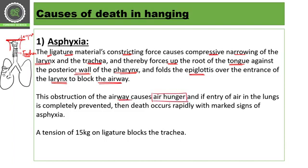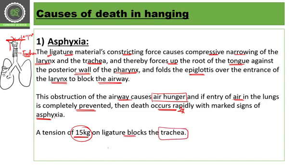This obstruction of the airway causes air hunger. If the entry of air into the lungs is completely prevented, death occurs rapidly and creates signs of asphyxia. The ideal tension for hanging is around 15 kg — at this pressure the ligature will completely block the trachea and air passage, quickly followed by rapid death.